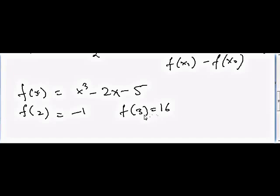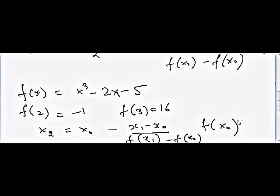So we can assume this one as x zero and 3 as x one. So we can write this equation and solve for x2. x2 is equal to x zero minus (x one minus x zero) divided by (f of x one minus f of x zero) times f of x zero, and that will be equal to 2.0588.